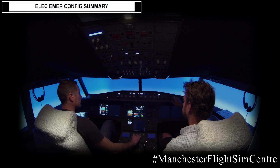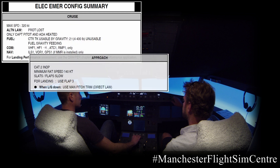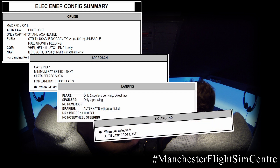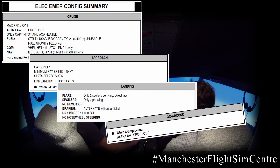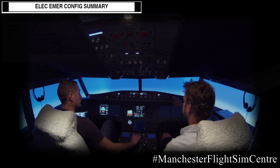Once the ECAM actions are completed, the pilot monitoring will then refer to the corresponding electrical emergency config summary. This is broken down into phases of flight and gives guidance on the main limitations and flight capability of the aircraft, and can be used in the decision-making process for the crew.